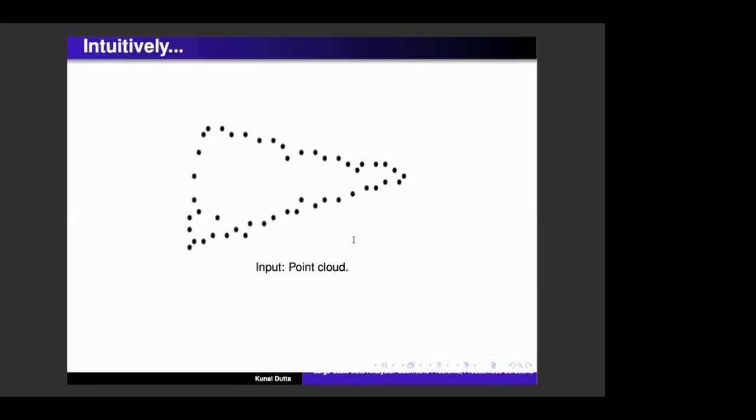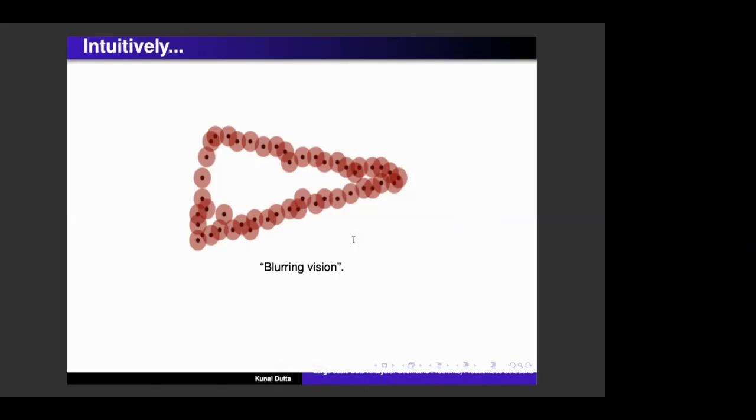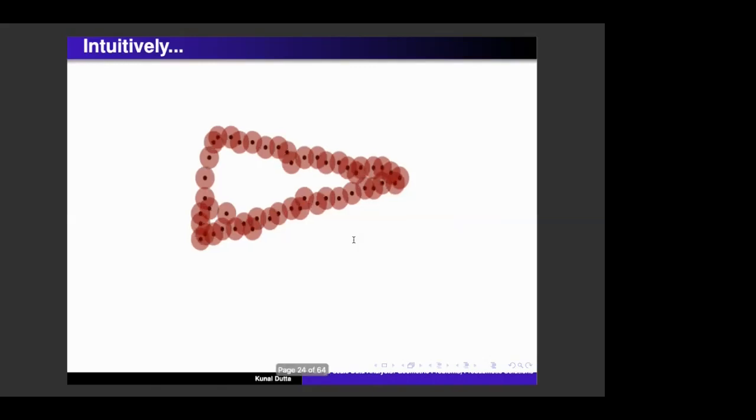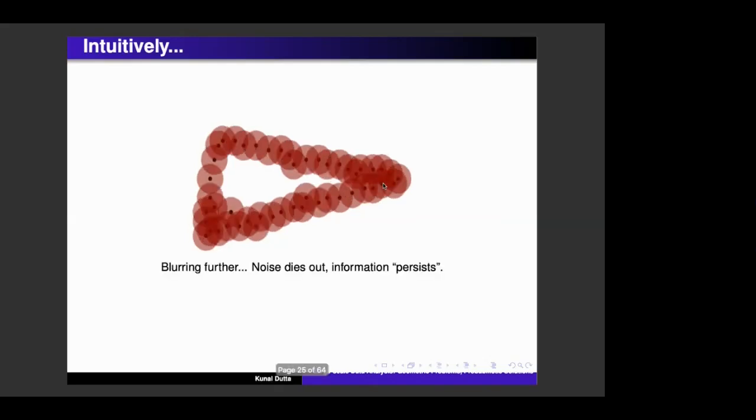So just to take one example. So you have some kind of point cloud, let's say, in two-dimensional space. And you sort of blur your vision. So you think of the points as balls now of increasing radius. And what happens is as the radius increases, more and more balls overlap. And you get these holes. So you have one large hole and you have a couple of small holes here. And as the radius grows still further, only the large holes will remain.